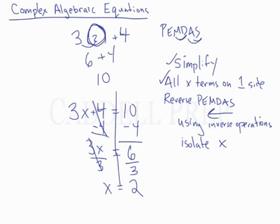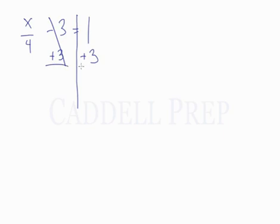So let's try a different example. We have x divided by 4 minus 3 equals 1. So if this were a number, we would do this number divided by 4, then we would subtract 3 in order to get 1. So the last thing we would do would be subtract 3, so that's the thing we have to take care of first. We have to do the inverse of subtracting 3, which is to add 3, and we do that to both sides.